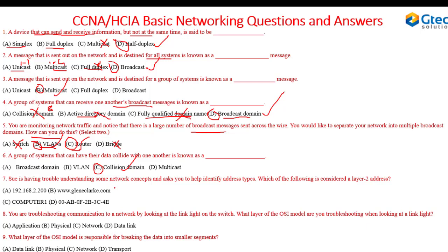Question seven: which of the following is considered a layer two address? Layer two is the data link layer, and at the data link layer we deal with MAC addresses. Checking the answers — one is an IP address, one is a URL or domain name, and one is just a computer label. The answer is the MAC address.